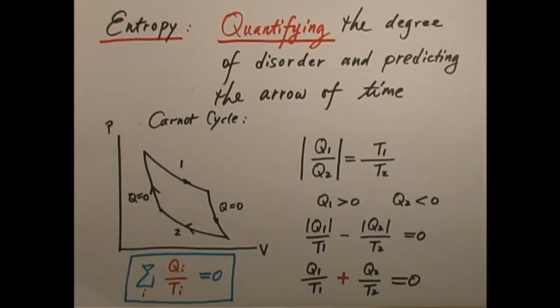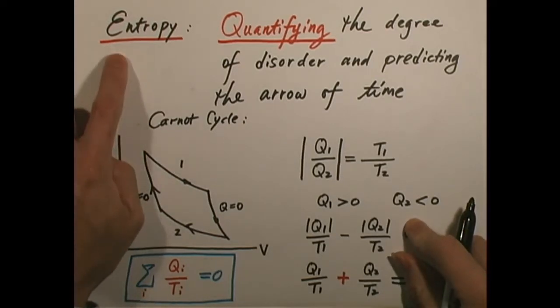We can, of course, judge things from common sense, but scientifically, how does one point at the correct direction of the arrow of time? What is the reason why certain things can only proceed forward, not backward? In other words, why are things irreversible? Well, it turns out, to study this further, we must introduce a key concept — the so-called entropy.